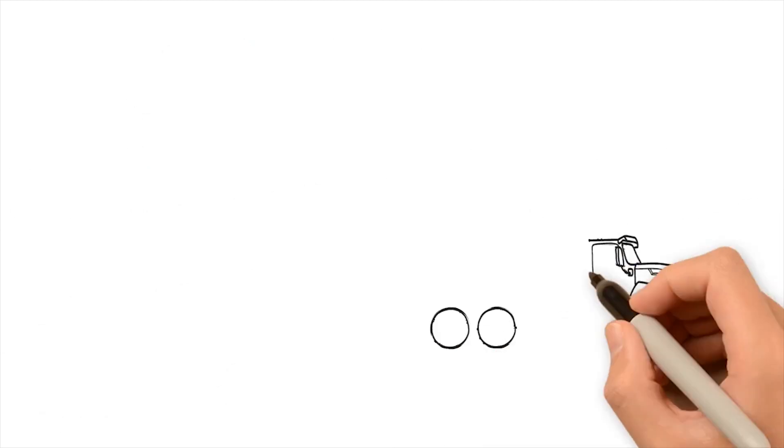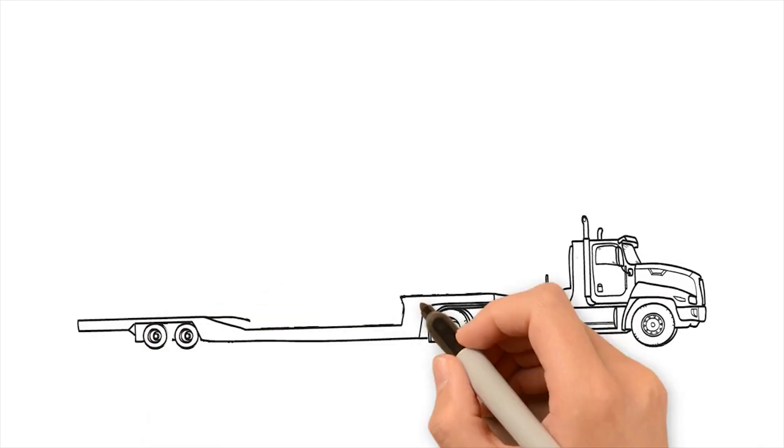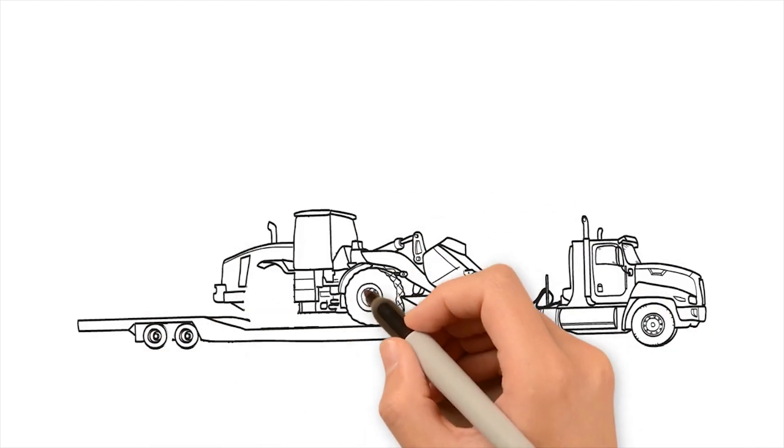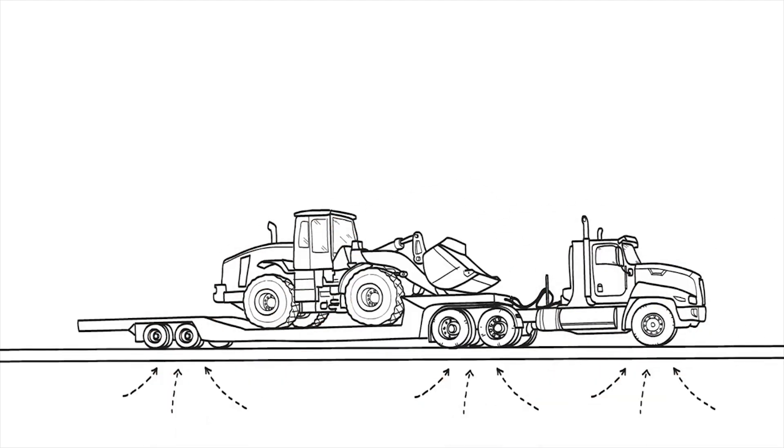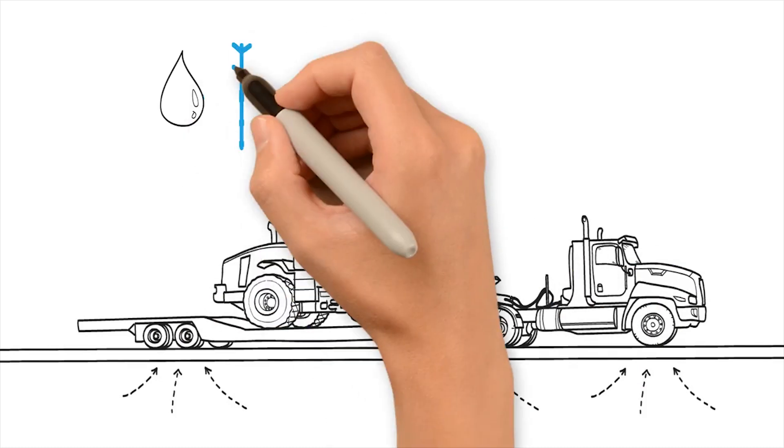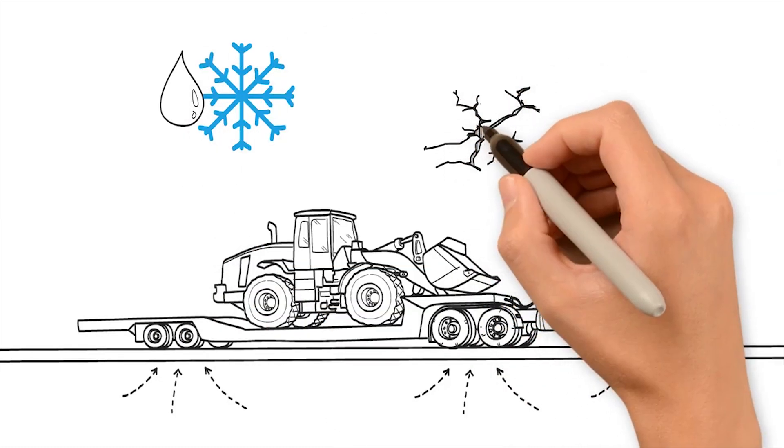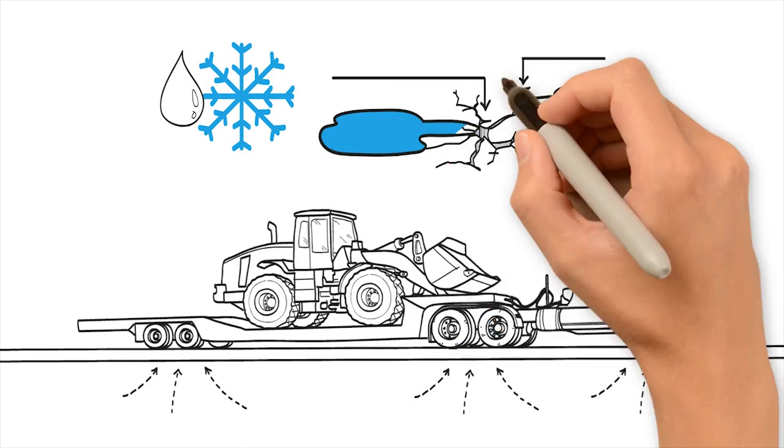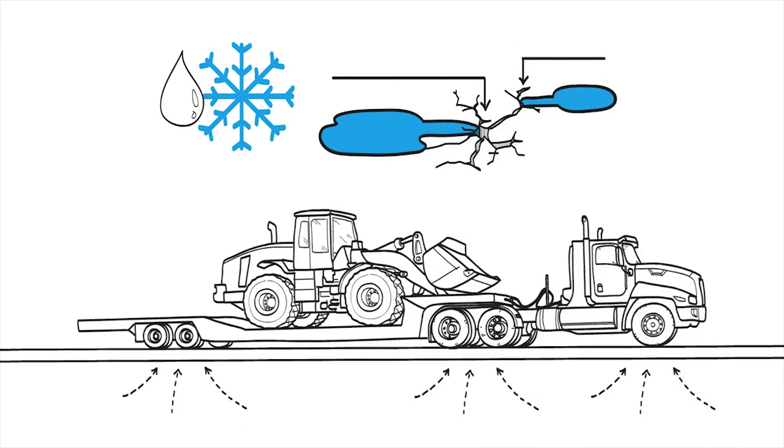The passage of vehicles, particularly heavy vehicles, can lead to cracking which then allows water into the road surface. In winter, repeated cycles of freezing and thawing of water under the surface leads to expansion, heaving the surface up and enlarging the crack, allowing more water to enter.